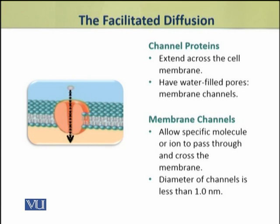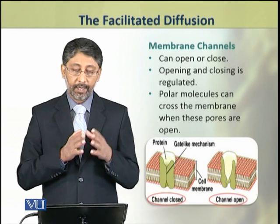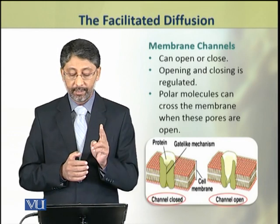Channel proteins are comparatively large. One end faces the extracellular end of the plasma membrane and the inner end faces the intracellular surface of the membrane. They have small water-filled pores called membrane channels, through which ions or other molecules can cross the membrane. These pores are very small and are often less than one nanometer in diameter. These membrane channels have the capacity to open or close, and their opening and closing is regulated. Polar substances can pass through these channels only when they are open.